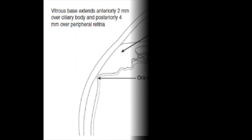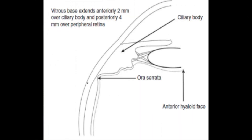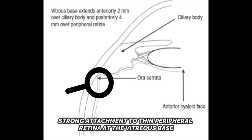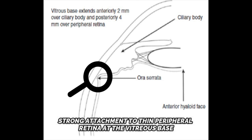Before performing anterior vitrectomy, it is vital to understand the vitreous base anatomy. The retina is thin peripherally and has strong attachments at the vitreous base. Intraoperative manipulations will increase the risk of retinal tear at this area.